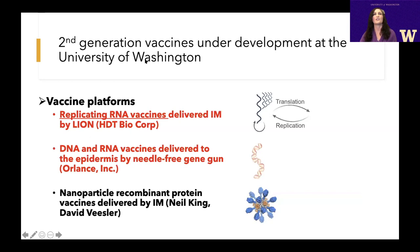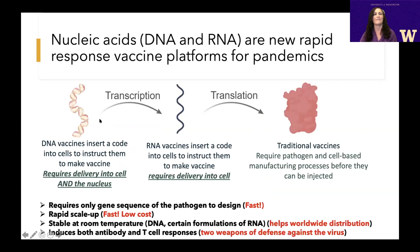The second-generation vaccines we're developing at UW are designed to induce those types of immune responses. Our vaccine platforms include a replicating RNA vaccine — somewhat different from Moderna's and Pfizer's — along with delivery of DNA and RNA vaccines by needle-free technology. There's also a third vaccine we're developing in collaboration with Neil King and David Wiesler at the Institute of Protein Design: a nanoparticle recombinant protein vaccine.